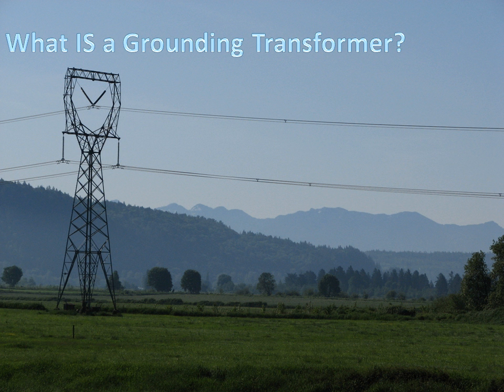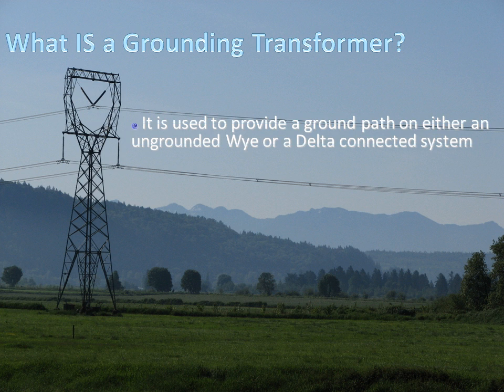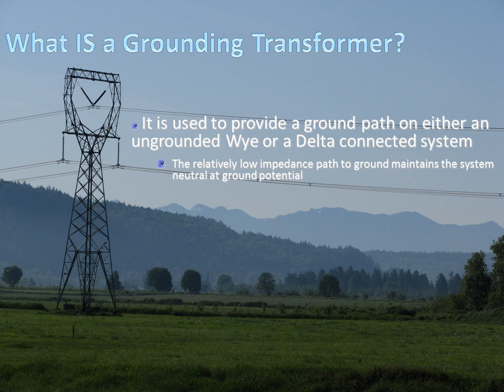So what is a grounding transformer? As the name implies, it's used to provide a ground path on either an ungrounded Y or a delta-connected system. Furthermore, the relatively low impedance path to ground maintains the system neutral ground potential during fault events.